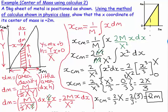Let's recap. First, we drew a large clear diagram. This is a center of mass problem for a distributed mass, so we wrote down the integral expression x_cm equals one over M times the integral of x dm. We recognized that we can't integrate x with respect to dm directly, so we needed to convert dm into something involving dx.